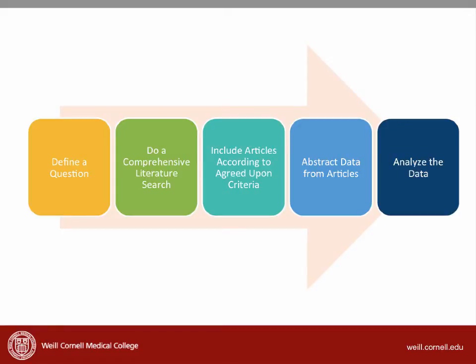There are five steps to a strong systematic review. First, we have to define a clinical question. Next, we have to do a comprehensive literature search. Then we have to include articles according to agreed-upon criteria. Then we abstract data from those articles and analyze the data.